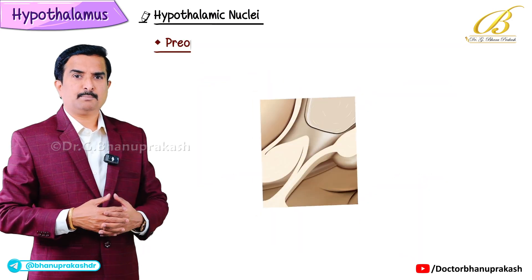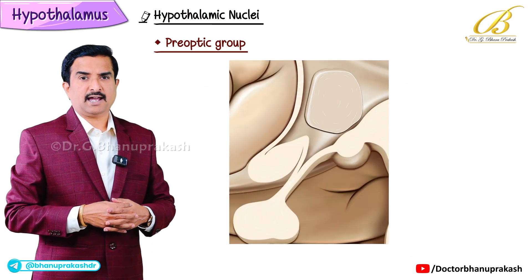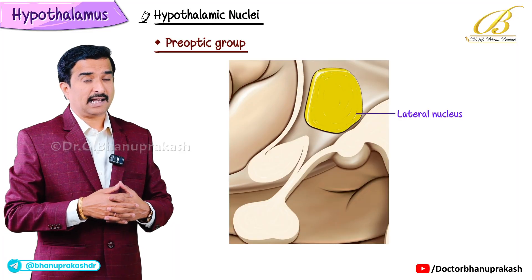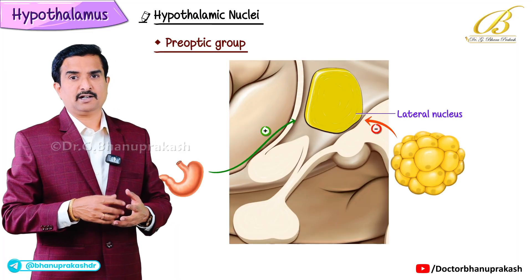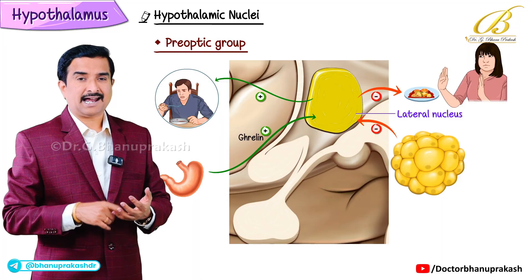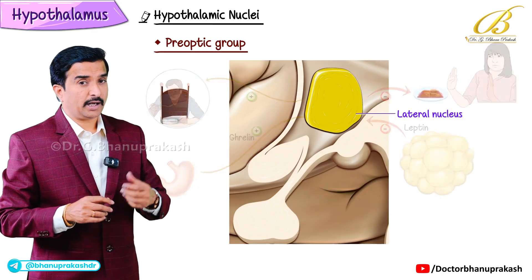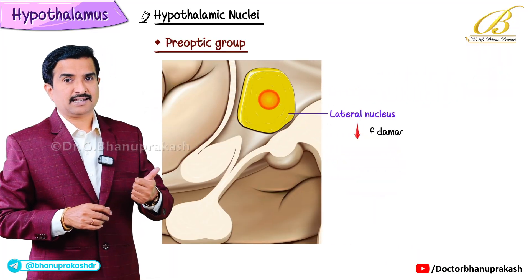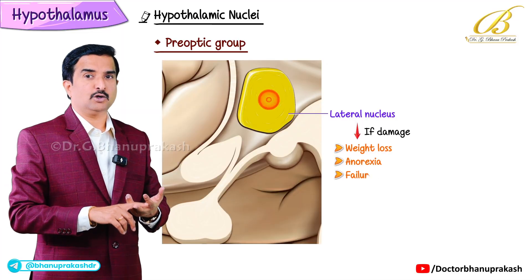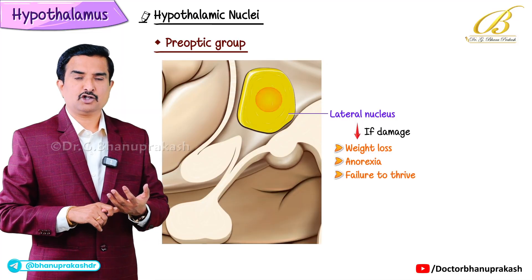The next is the pre-optic group. In the pre-optic group we have the lateral nucleus, which regulates hunger and is stimulated by ghrelin and inhibited by leptin. Injury results in weight loss, anorexia, and failure to thrive, especially in children.